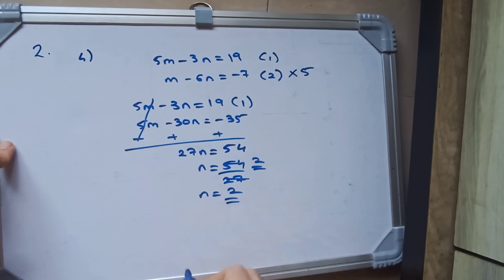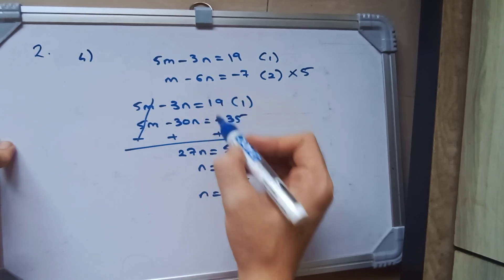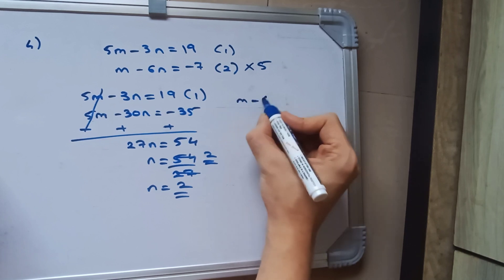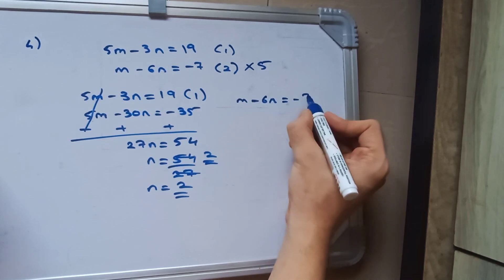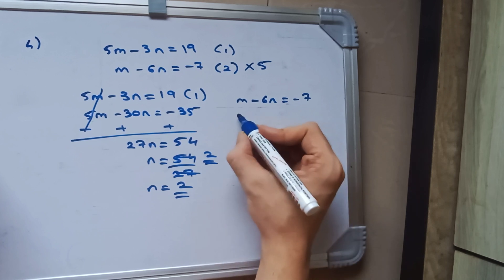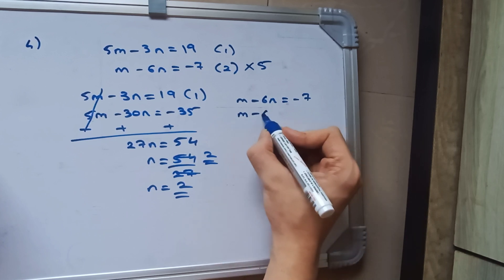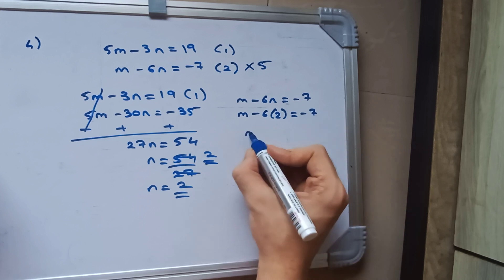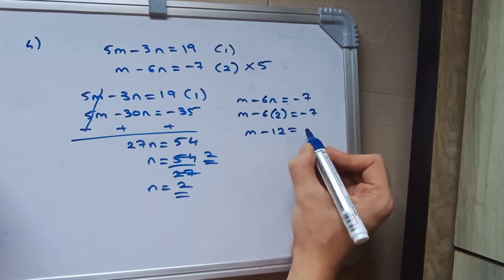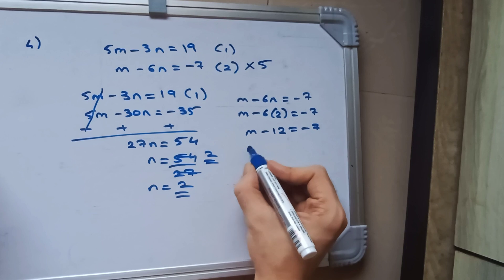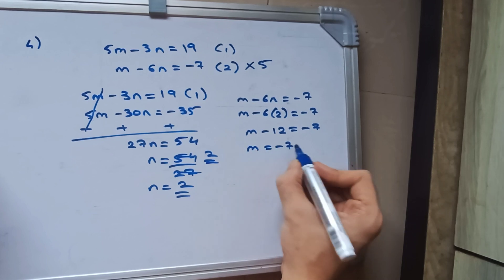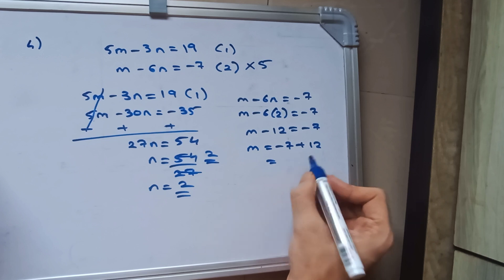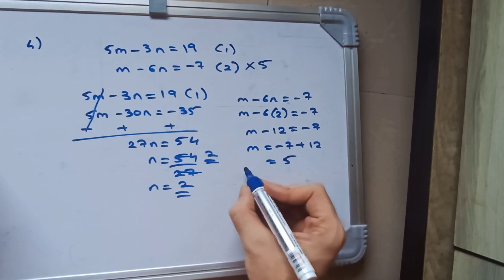2 is going to be the answer. Now we need to find m. So we will substitute in m minus 6n: m minus 6 into 2, which is equal to m minus 12 is equal to minus 7. So minus 12 becomes plus, and the answer that we get is 5.